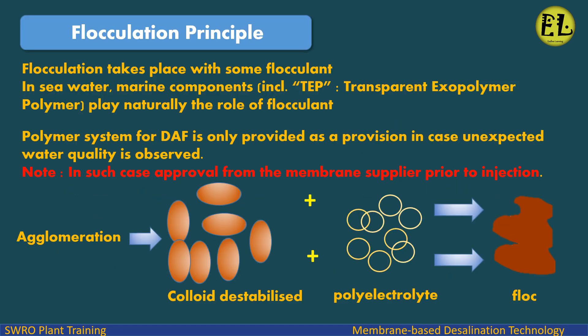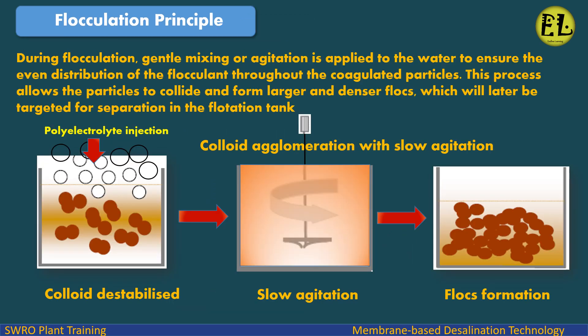Flocculation principle: Flocculation takes place with some flocculant in seawater. Marine components, including TEP (Transparent Exopolymer Particles), naturally play the role of flocculant. A polymer system for DAF is only provided as a provision in case unexpected water quality is observed. Note: in such a case, approval from the membrane supplier is required prior to injection. During flocculation, gentle mixing or agitation is applied to ensure even distribution of the flocculant throughout the coagulated particles, allowing particles to collide and form larger, denser flocs which will later be targeted for separation in the flotation tank.